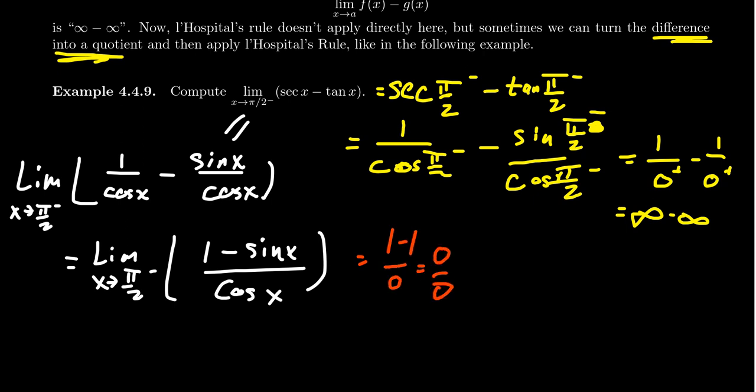This is a situation where L'Hopital's rule applies. So we'll take the derivative of the top versus the derivative of the bottom. The derivative of 1 is 0. Derivative of negative sine will be a negative cosine of x. The derivative of cosine will be a negative sine of x. Take the limit here, as x approaches π/2.